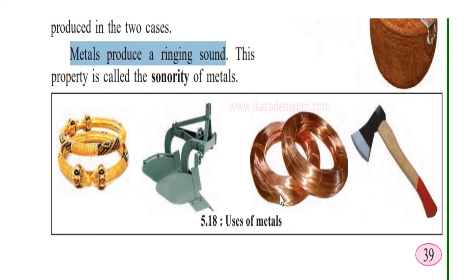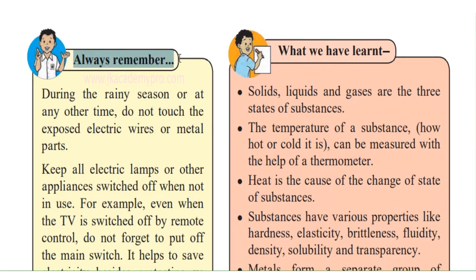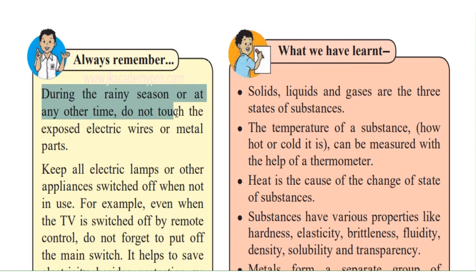Based on properties, uses are derived. Now, always remember this, students: during the rainy season or at any other time, do not touch exposed electric wires or metal parts. Exposed means wires that are open. Don't touch them — you could lose your life because electric current passes through them, and metals are good conductors of electricity.